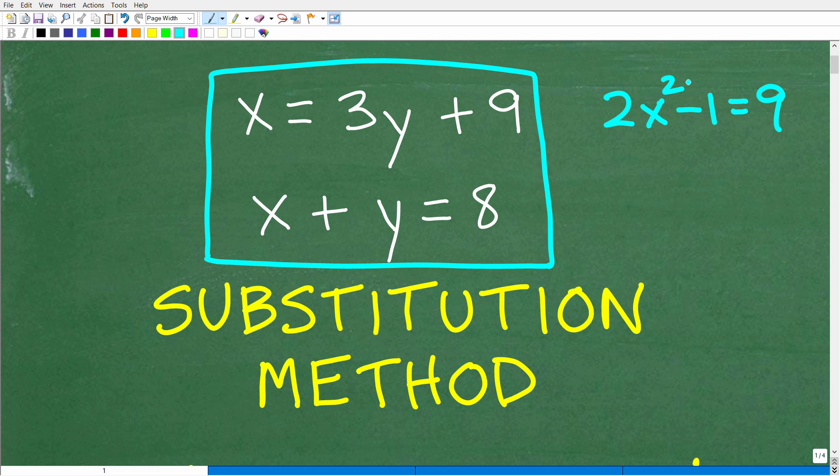Now, if I put a little 2 up there, now we have a quadratic equation. We can have radical equations. We can have all different types of equations in algebra, and you must know how to solve each type of equation.